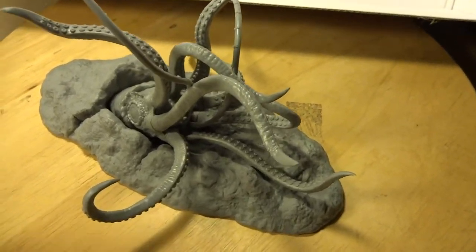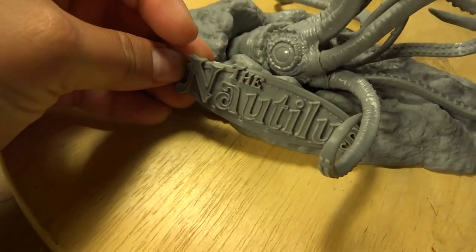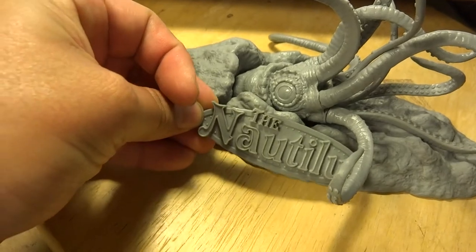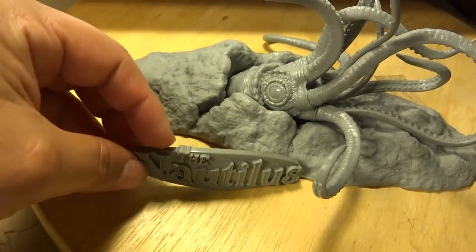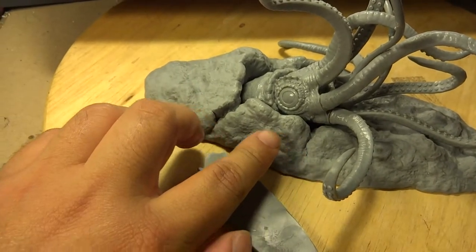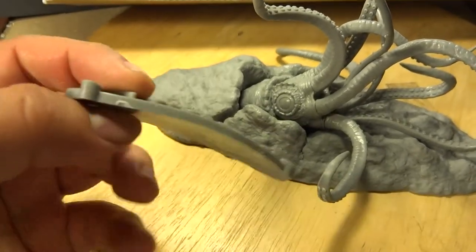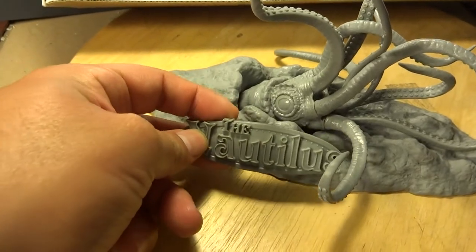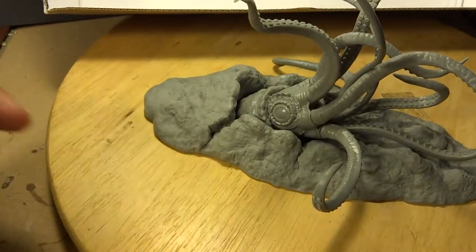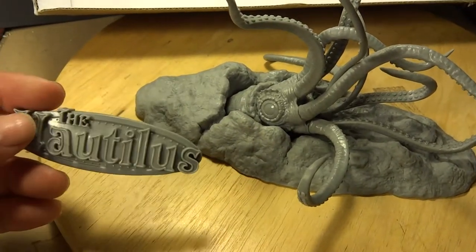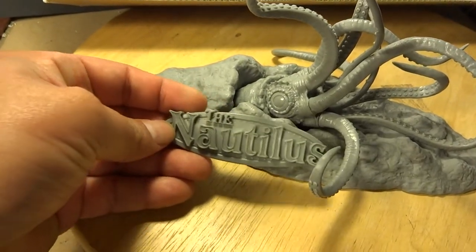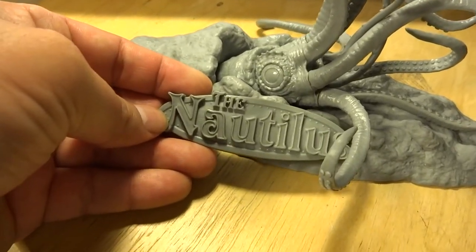The nameplate will go somewhere in here. What I'll probably do is put some Aves Epoxy Sculpt here, and then wet this with water and then press it on, then remove it, wait for the Aves to dry, and then glue it on. It'll fit perfectly.